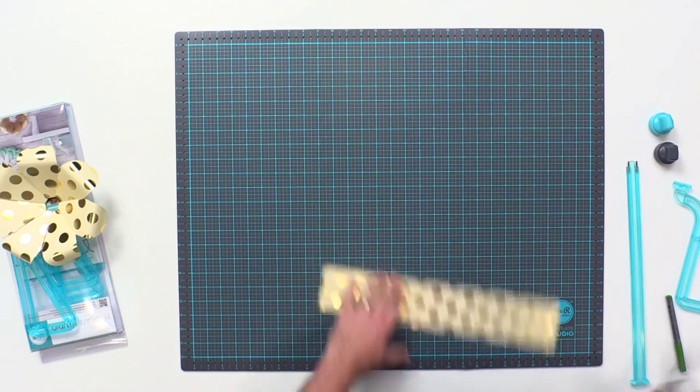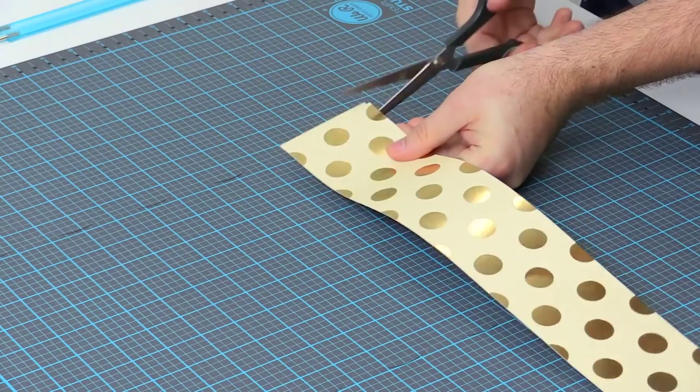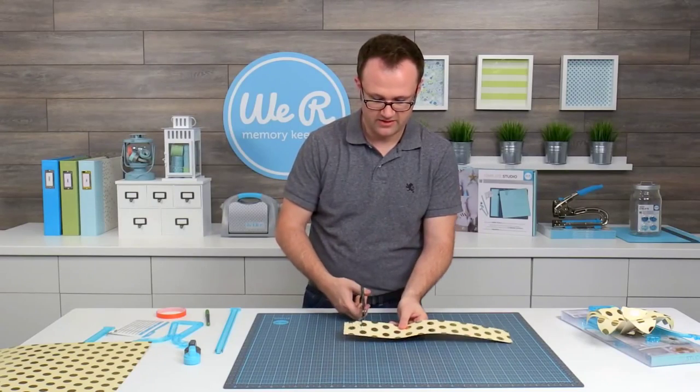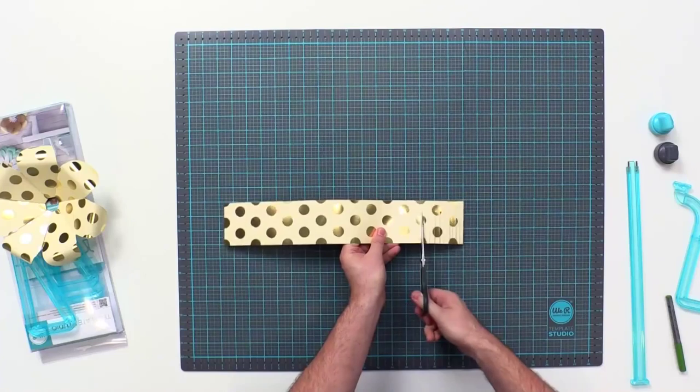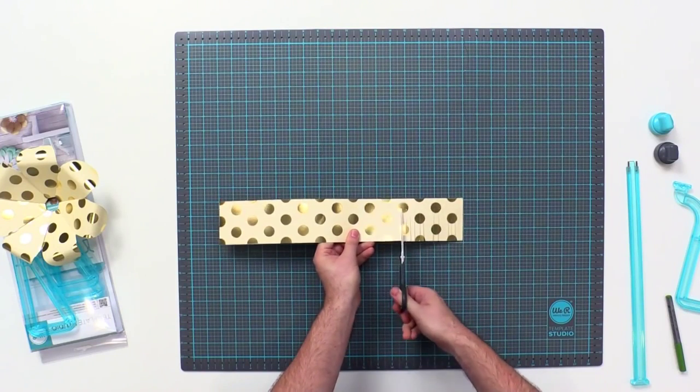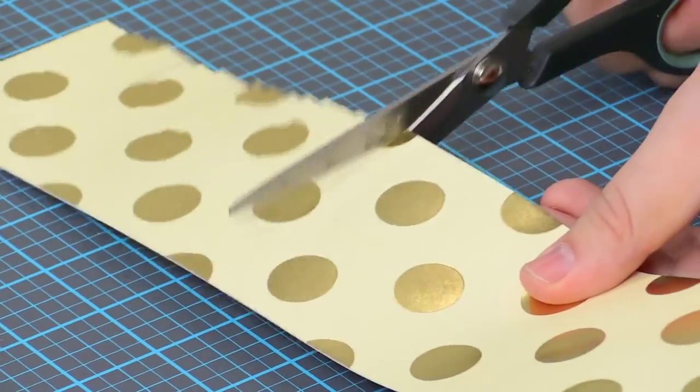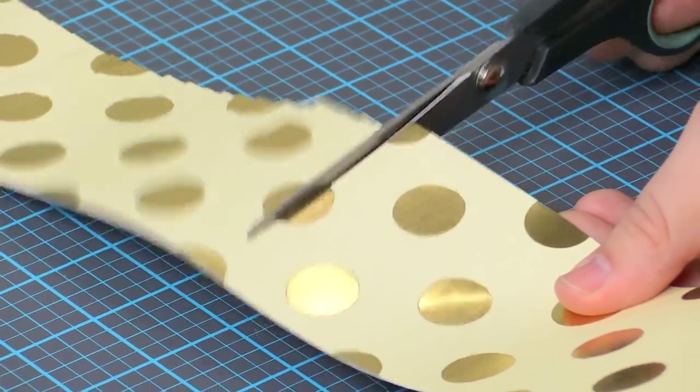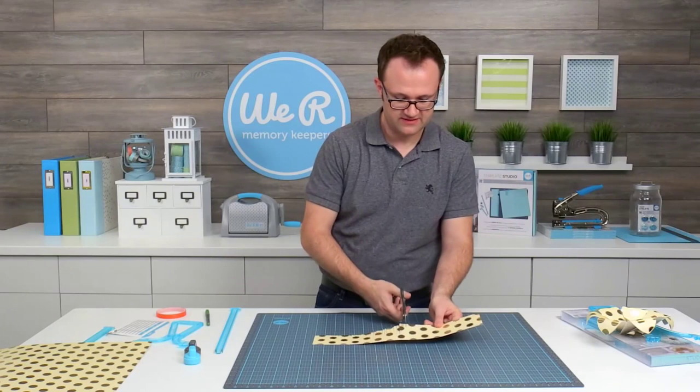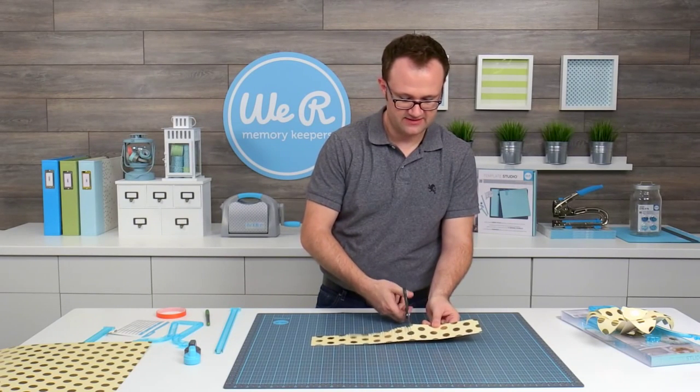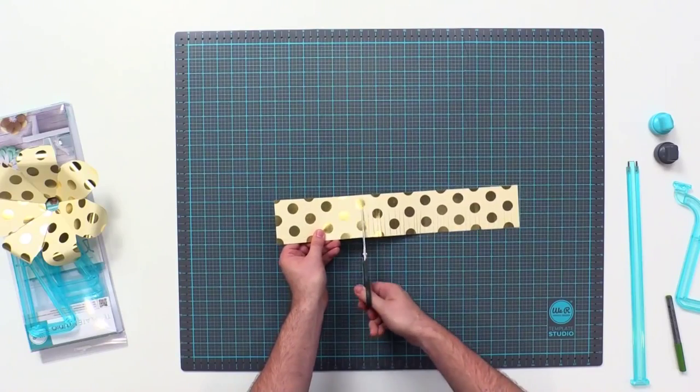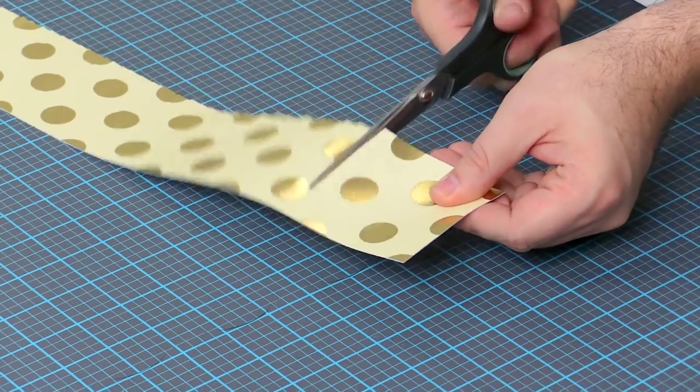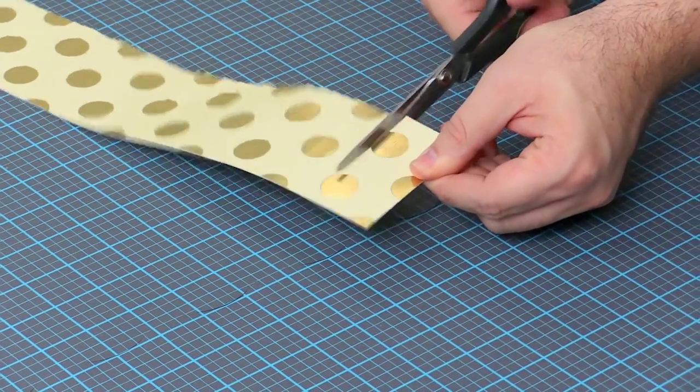Using some scissors, I'm just going to come along and I'm going to cut along here for some fringe. You just want to make sure that you're not cutting all the way through this. You're just cutting down, fringing this as you go along. It really doesn't matter how far apart or how close together it is. It's just going to create a nice fringy center to your flower. The longer the strip is, the bigger the little puff ball in the middle is going to be.